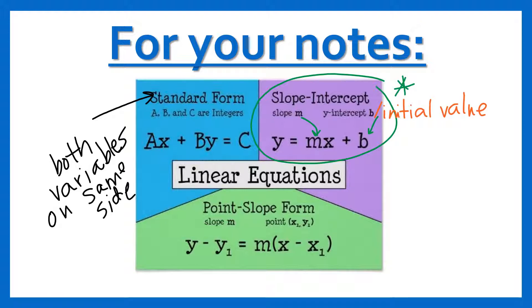Point-slope form is one you may or may not have gone over. It also follows m as the slope, and then this specific form gives you a point on your line. So these are three forms you can use when creating a line that can be important.